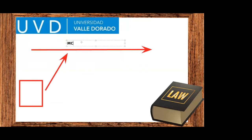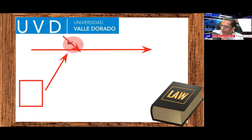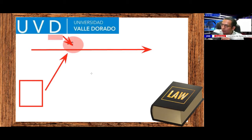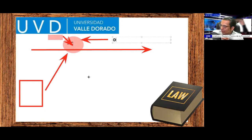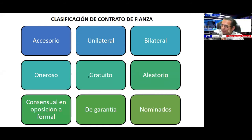The teacher acknowledges this is a valuable practical contribution. In the ejecutivo mercantil, the embargo is a precautionary measure; the diligencia must be carried out per the judge's mandate. Subsequently, the embargo might be nullified if the real right of guarantee constituted in relation to the principal obligation is exercised. Thanks to Maestra Sandra for her practical insights regarding the contrato de fianza.